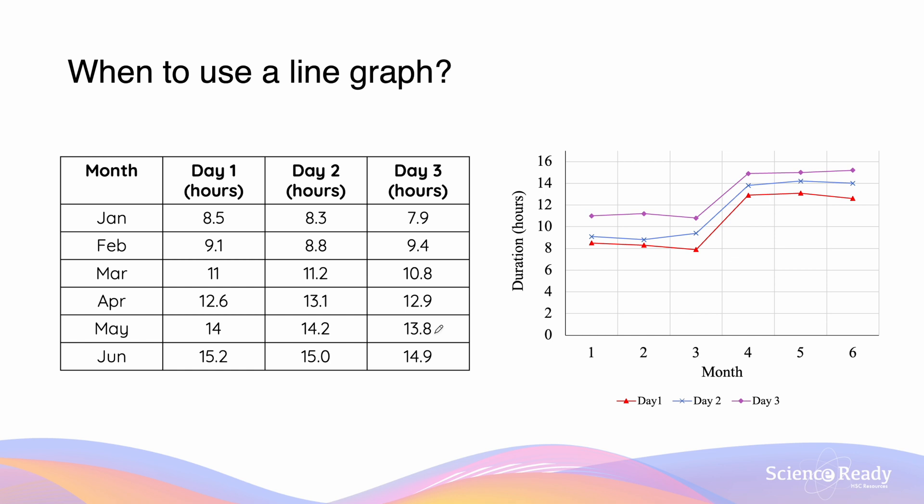In this next example, we are looking at the duration of the first three days of each month. If we look at the data which has been plotted, we can see that there is a non-linear trend, or no clear trend.